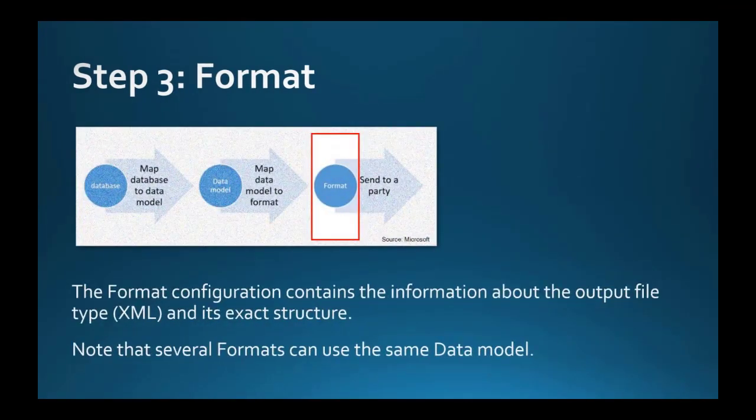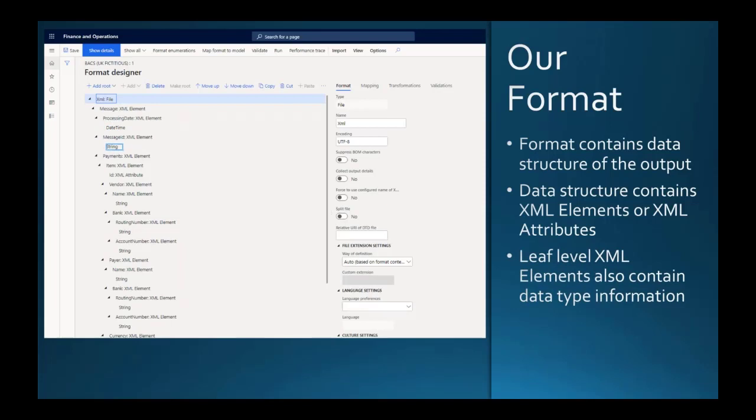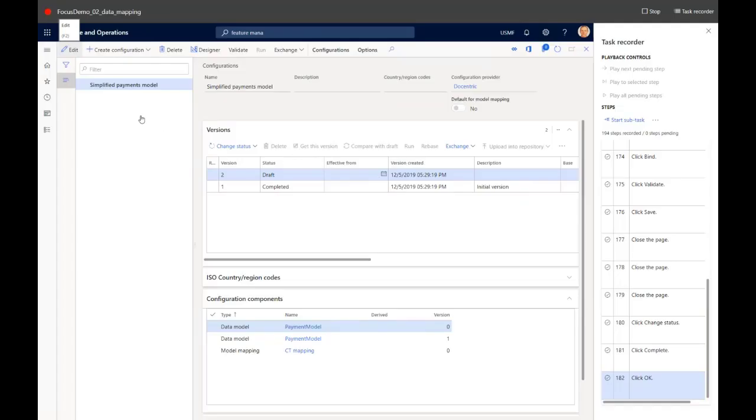Let's look at the data model. In the format we will tell what we want as XML and what kind of output we will have in the structure. Note that our data model can be more general. For example, data model could contain superset of electronic payment information required by all banks, whereas individual formats will contain information for only specific banks, meaning not all the data, maybe just a subset of data. Therefore, one data model could be used by several formats. Formats needs to have the data structure similar to what we have seen in the data model. And this data structure contains XML elements and XML attributes where the data will come at runtime. In addition to that, each leaf level element, that means each XML element who have no children under it, contain another node which contains the data type information. Again, we are in our demo. This time it is the next step.